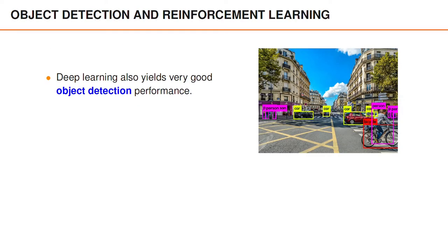After the breakthrough with image classification, deep learning has had an enormous impact on computer vision and has dramatically improved performance on a lot of computer vision tasks. One such problem is object detection, where deep learning is used to find and classify objects in an image. Since this problem is important for multi-object tracking, we return to this topic in later videos.